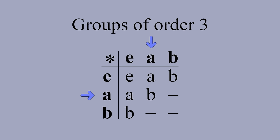We can now fill in the rest of the table. Since we've already used A and B in row 2, the last square must be E. Similarly, since there is already an A and B in the second column, this empty square must also be E. And lastly, the third row already has a B and an E. So B times B equals A.